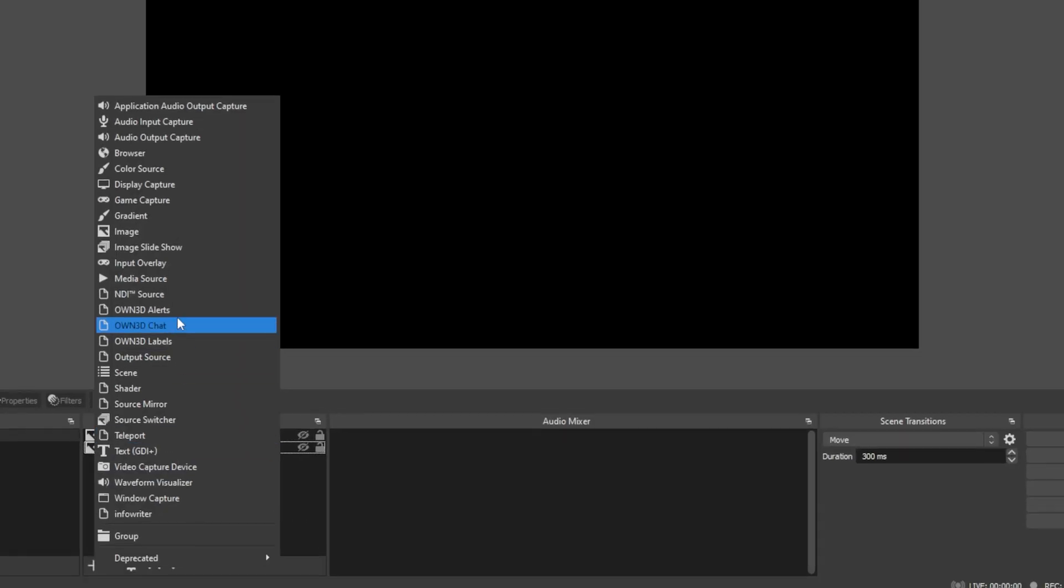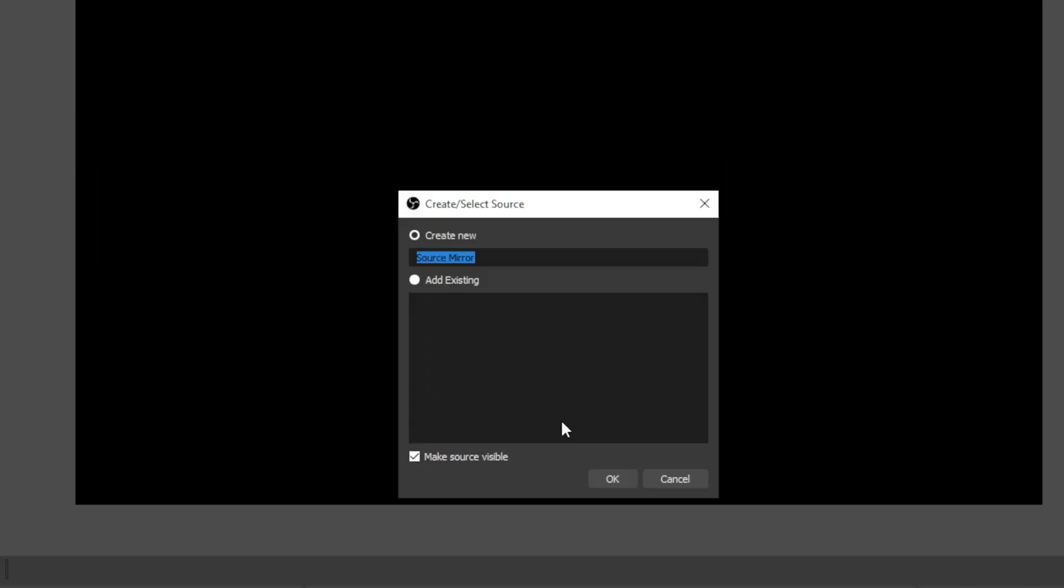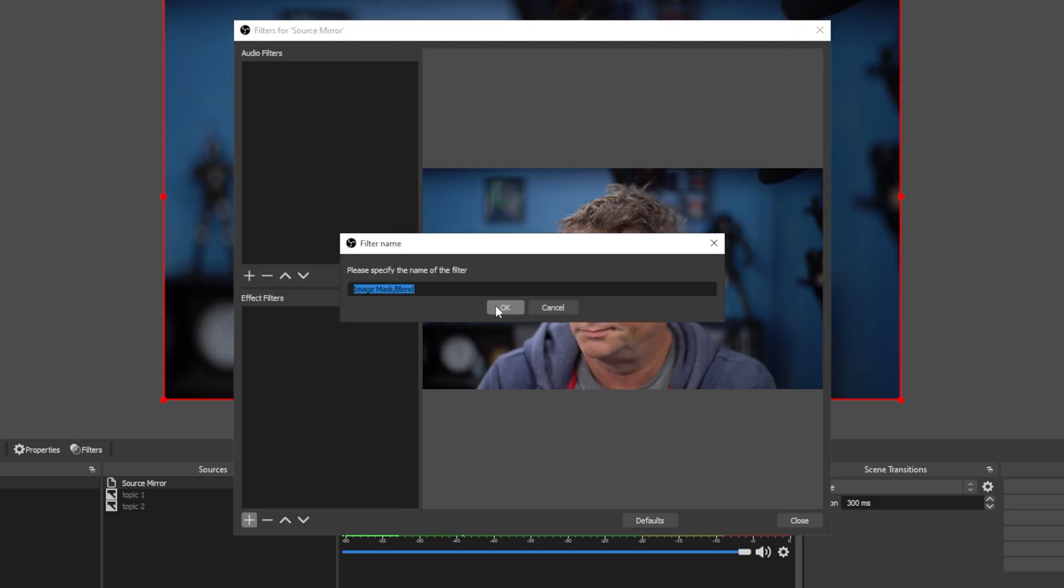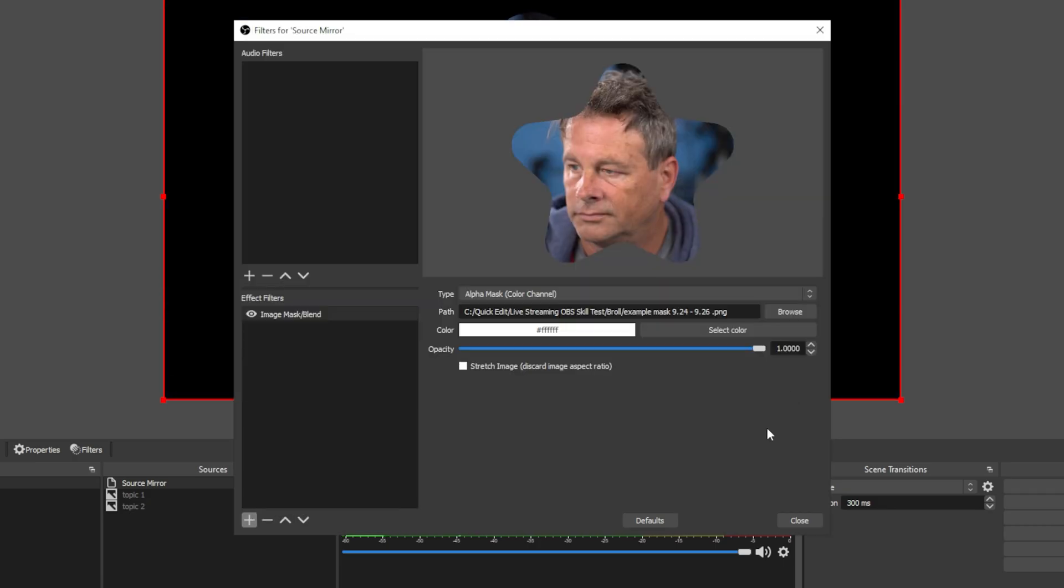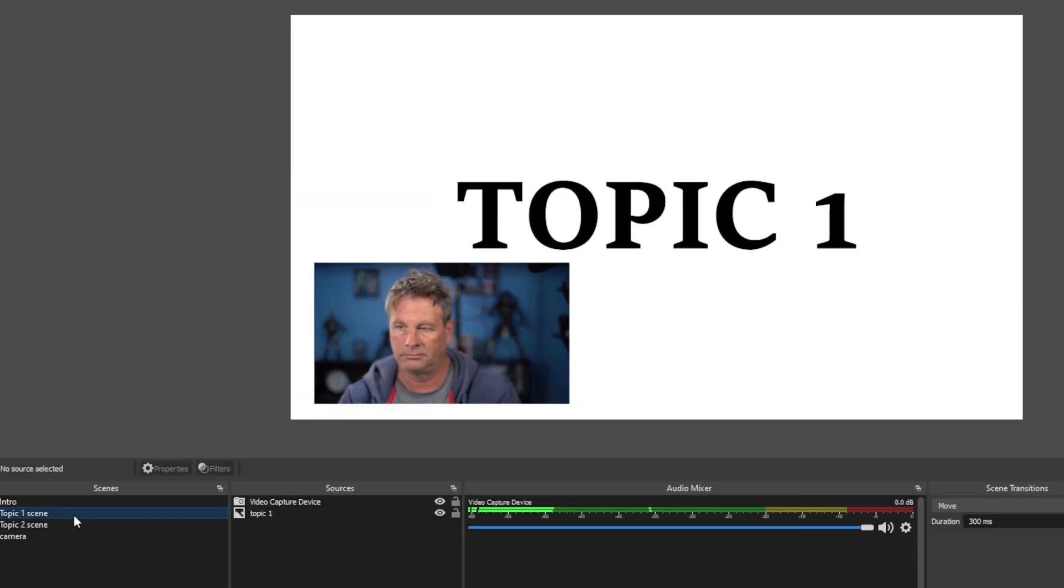Then we go into the sources on any scene and select Mirror Source. Now we can use the original source or create as many masked sources as we want. Now I know you didn't see that coming.